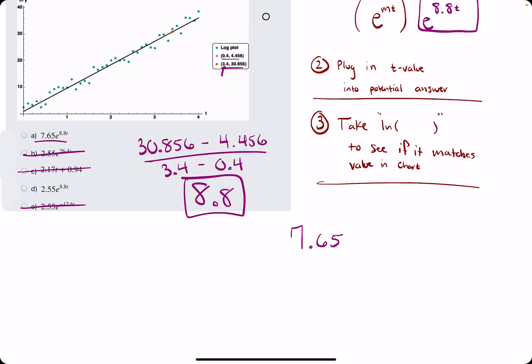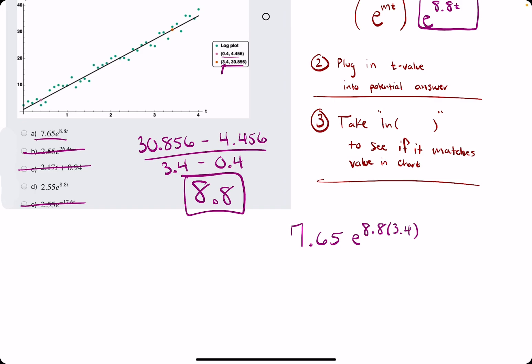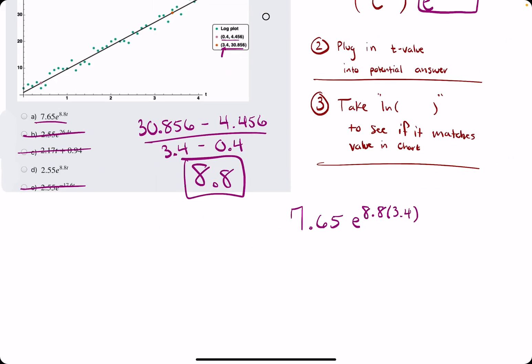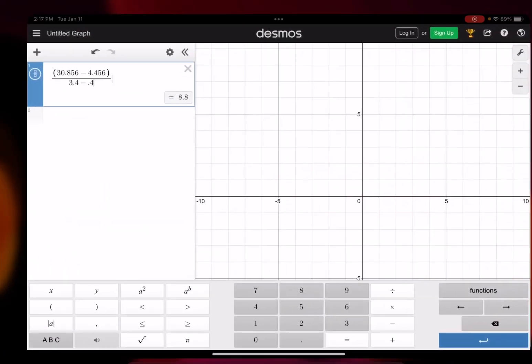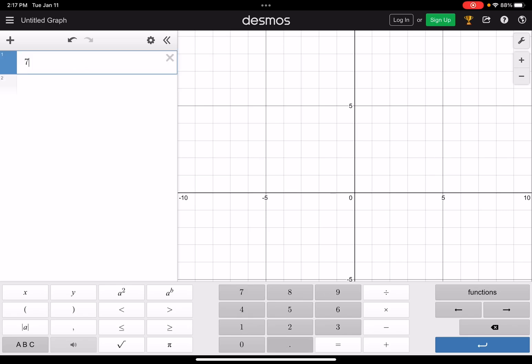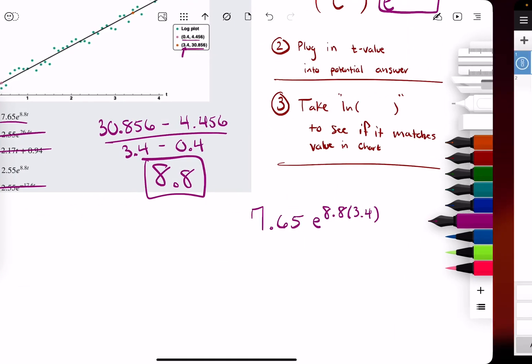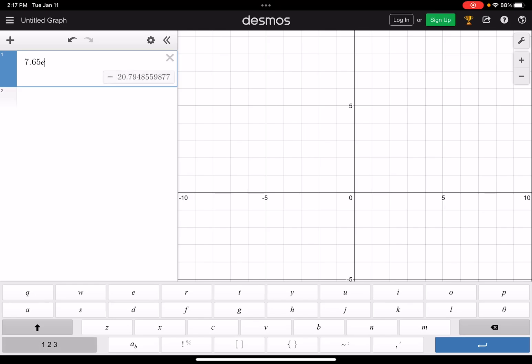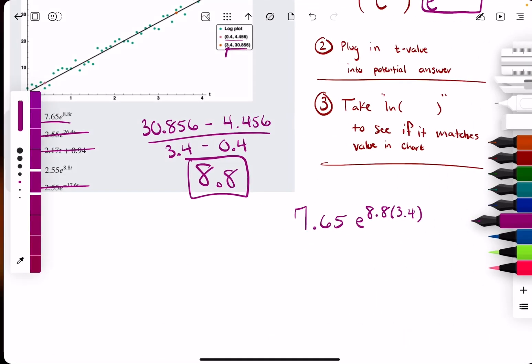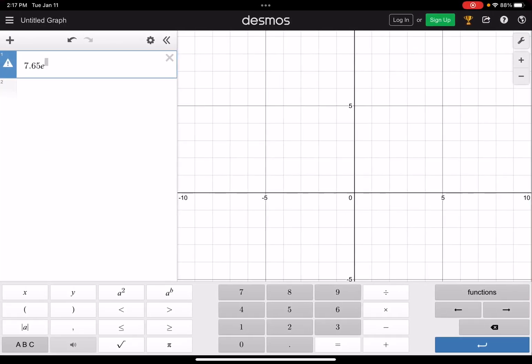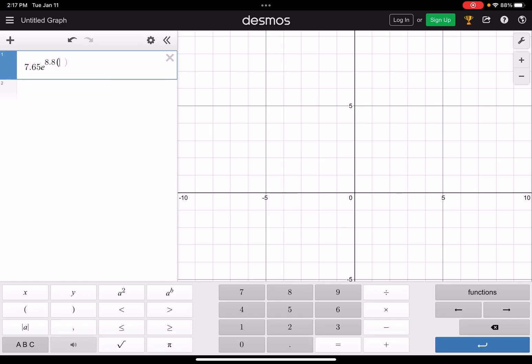So 7.65e to the 8.8t in place, which in place we are plugging, in place of which we are plugging 3.4. English is not my strong suit. We are working on math, of course, here. So don't mind me. Okay, we are just plugging this guy in here. We have e to the 8.8 and 3.4, all in the exponent.